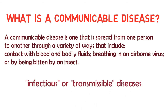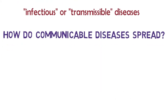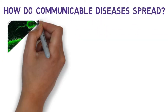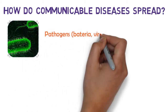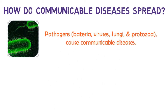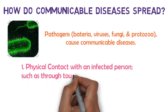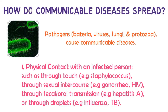How do communicable diseases spread? How these diseases spread depends on the specific disease or infectious agents. Pathogens including bacteria, viruses, fungi, and protozoa cause communicable diseases. Some ways in which communicable diseases are spread include contact with an infectious person, such as through touch — for example, staphylococcus — or through sexual intercourse, for example, gonorrhea and HIV.